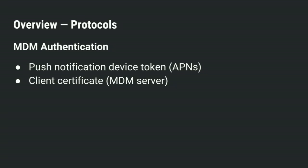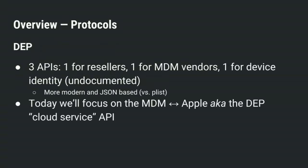There are actually three separate APIs related to DEP: one for resellers, one for MDM vendors, and one for the device itself to prove its device identity, which is undocumented. These are more modern APIs that use JSON — no PLists. Today, we're only going to be focusing on the middle one: the MDM-to-Apple communication between the MDM vendor product and the DEP cloud service API.